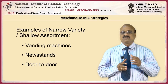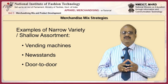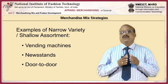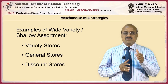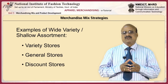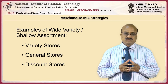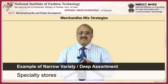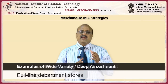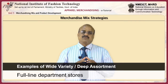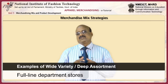Examples of narrow and shallow assortment are vending machines, news stands, and door-to-door sales. Examples of wide and shallow assortment are variety stores, general stores, and discount stores. Examples of narrow and deep assortments are specialty stores. Examples of wide and deep assortments are full-line department stores.